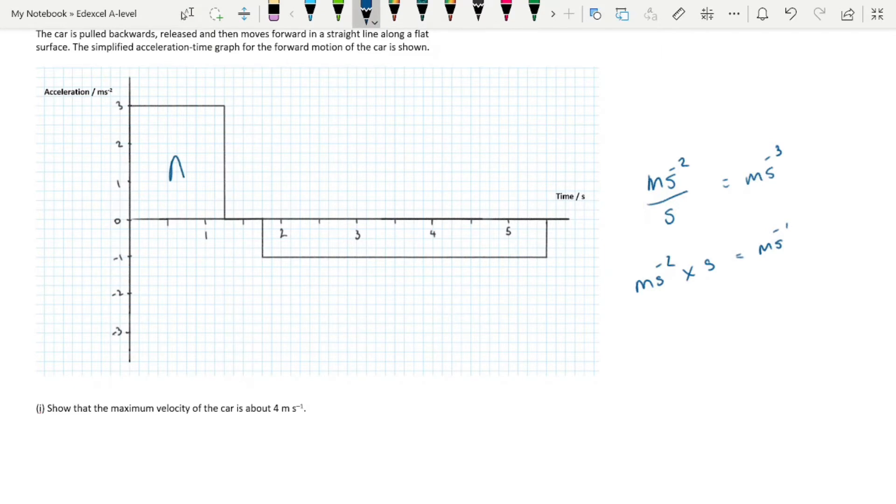We'll find the area under both parts of this graph, part A and part B. For part A, our y-axis is 3 meters per second squared, and our x-axis is 1.2 seconds, giving us 3.6 meters per second. For B, we have minus 1 meters per second squared multiplied by 3.6 seconds, which is also 3.6 meters per second. That's our answer.